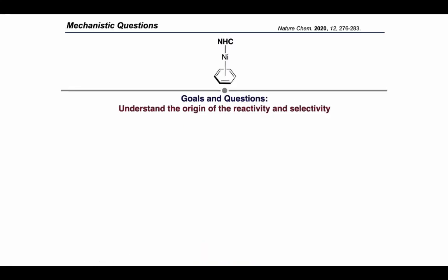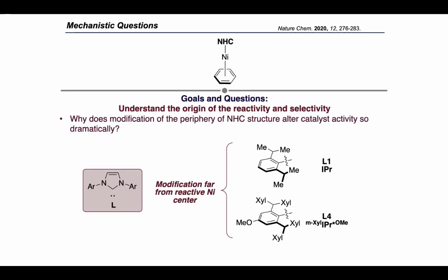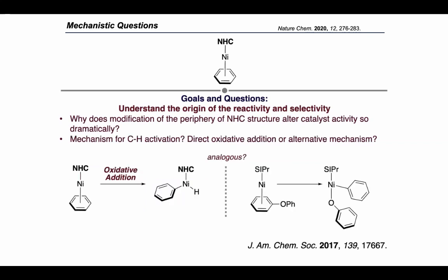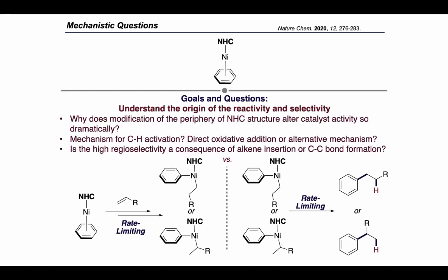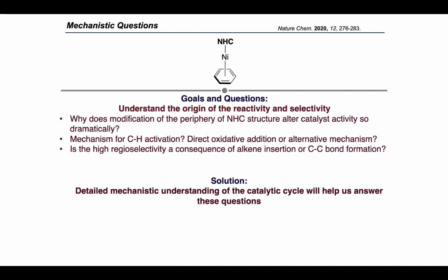Moving forward, we had a few questions about this catalytic system. Namely, we wanted to understand why changing the structure of the NHC ligand so far away from the reactive nickel center had such a large effect on catalyst activity. We also wanted to determine the mechanism for the C–H activation reaction: is it a direct oxidative addition of the C–H bond, in analogy to the mechanism previously established for C–O bond cleavage, or is there some other more complicated mechanism? Finally, is the high regioselectivity a consequence of a rate-limiting alkene insertion step to form either the linear or branched alkyl-metal intermediates, or does it come from a difference in barriers for a reductive elimination step to form the carbon–carbon bond? To answer these questions, we conducted a variety of experiments to fully understand the catalytic cycle.